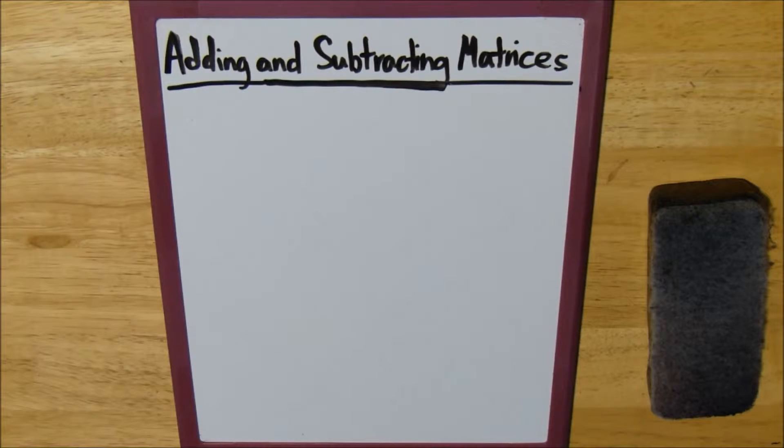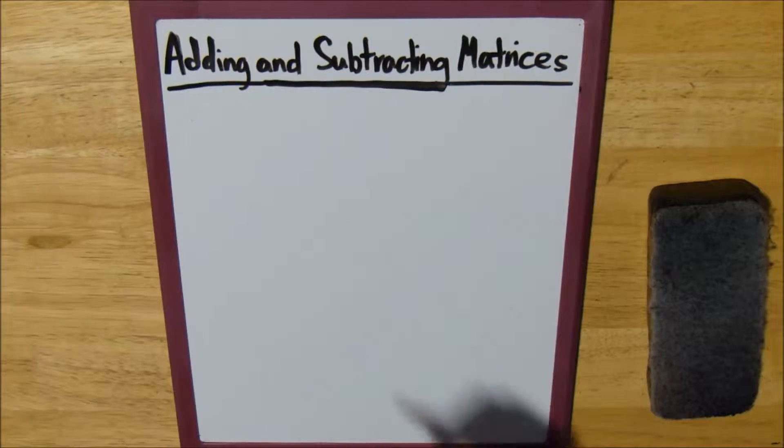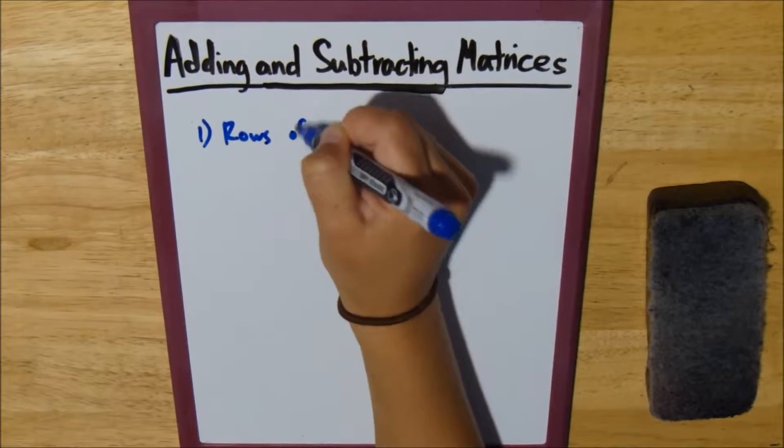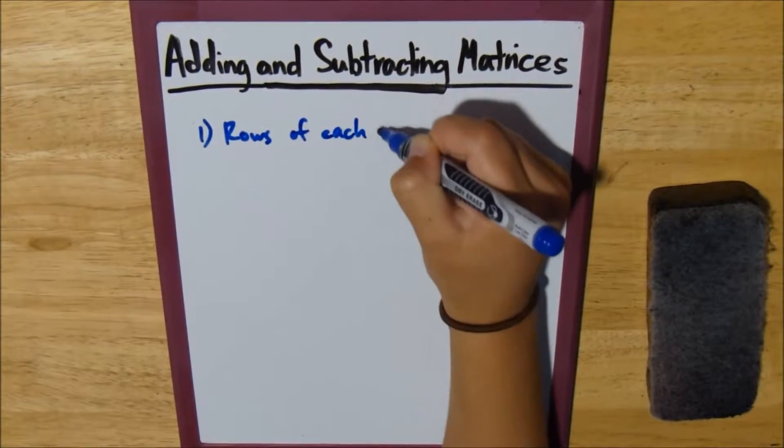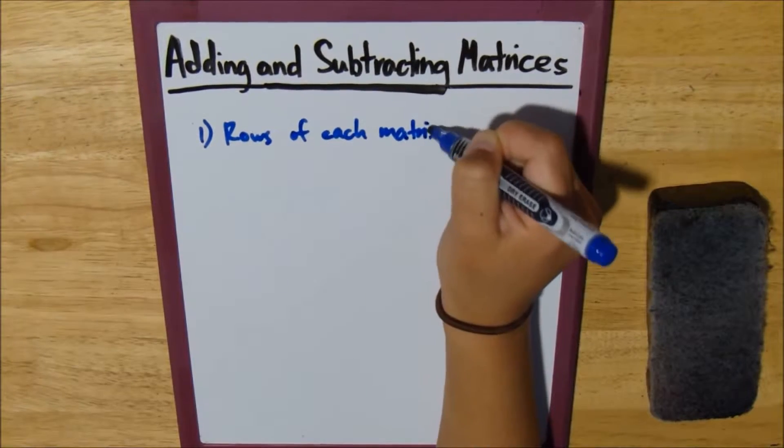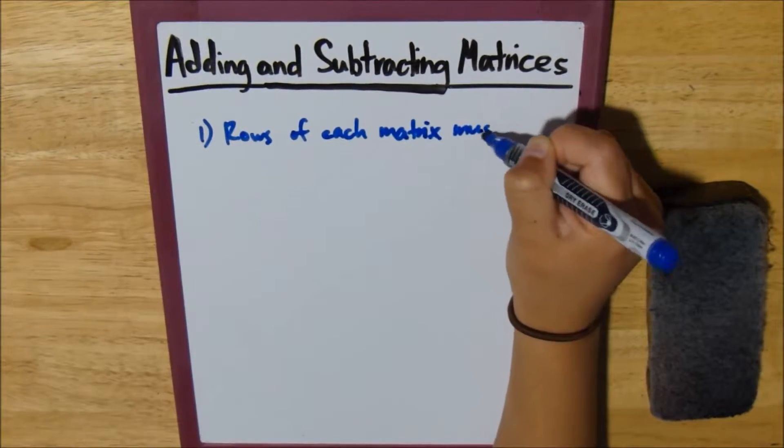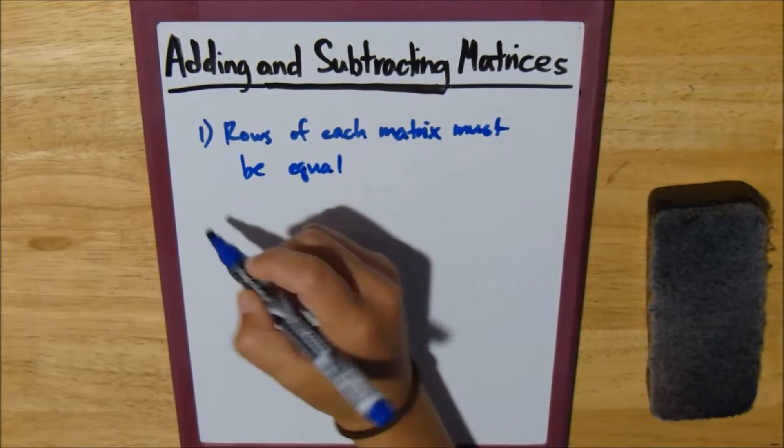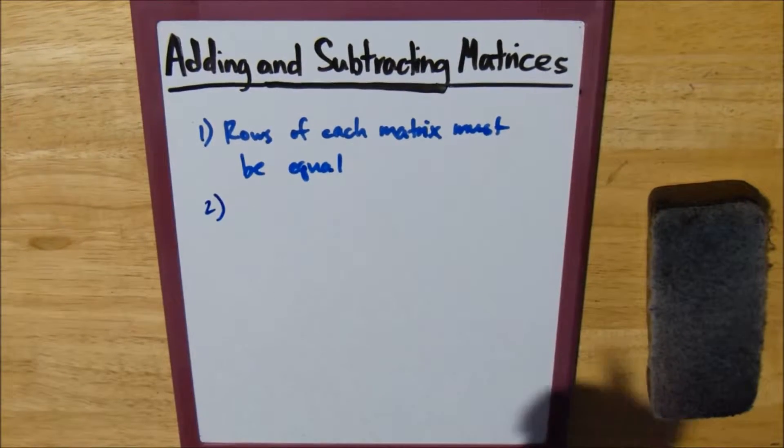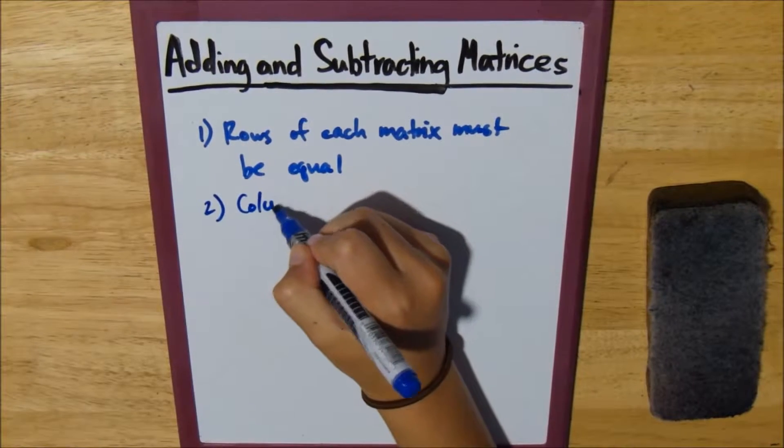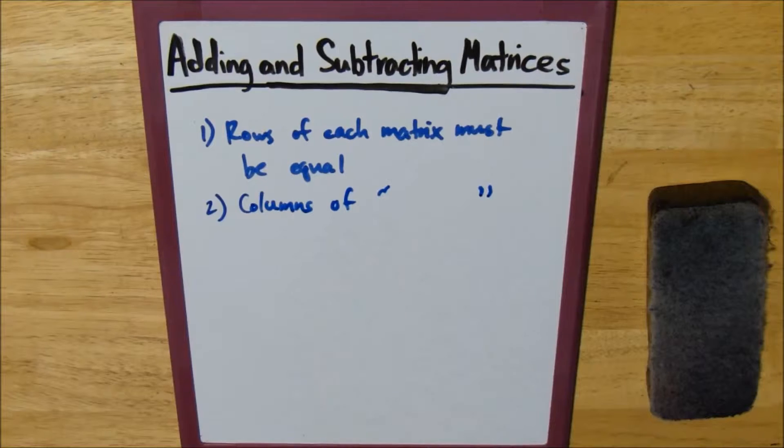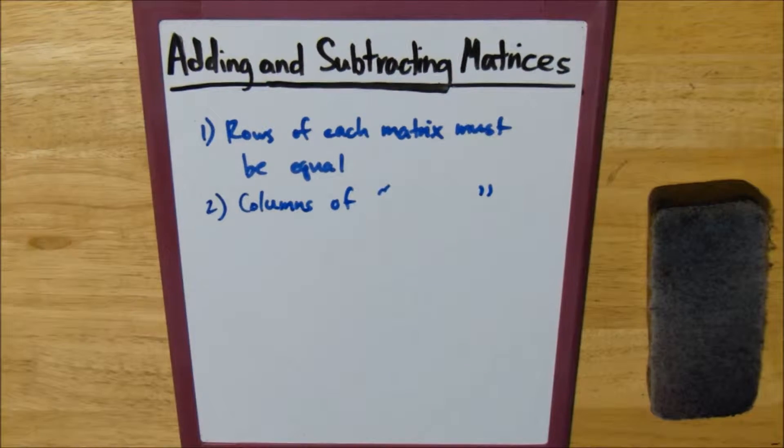Now, there are two rules that you must know before you add or subtract matrices. The first one is that the rows of each matrix must be equal. And the second rule is that the columns of each matrix must be equal. And now, what do I mean by that?